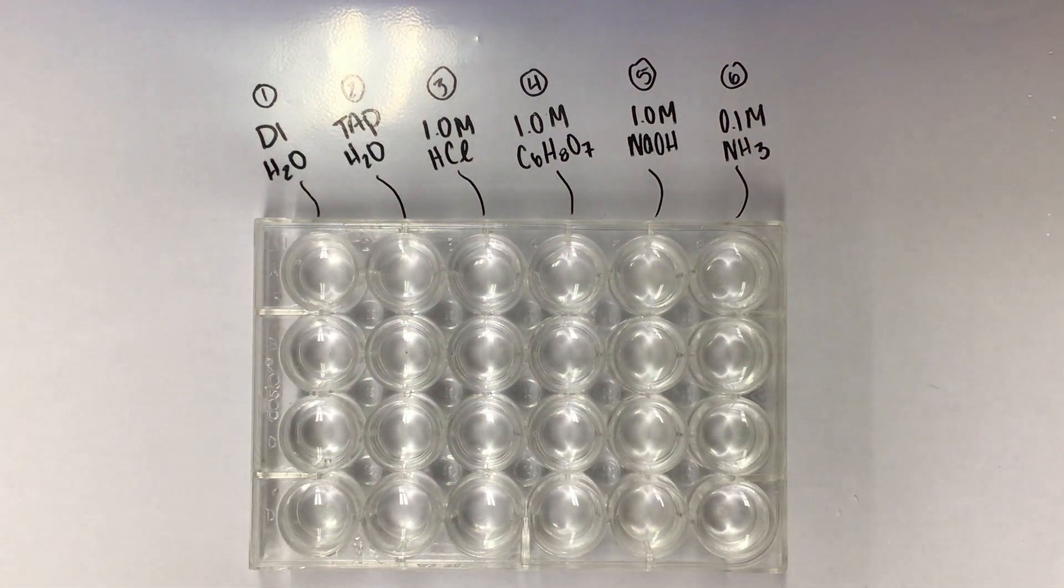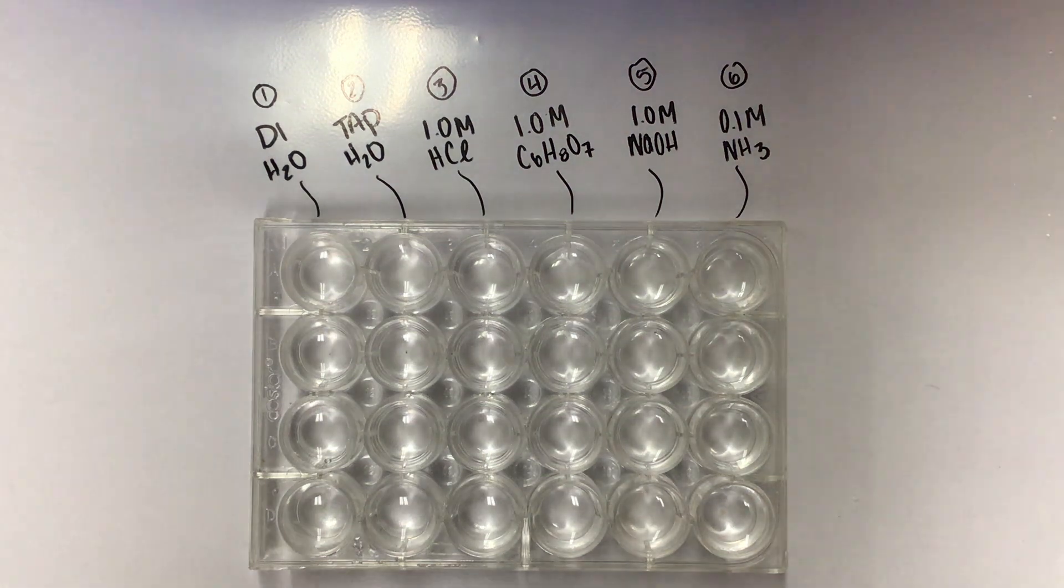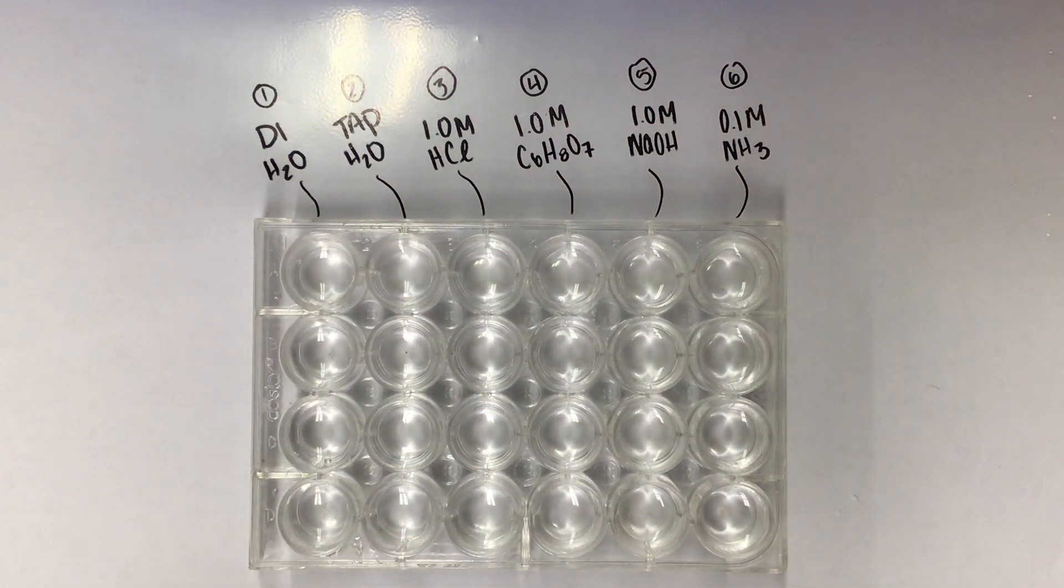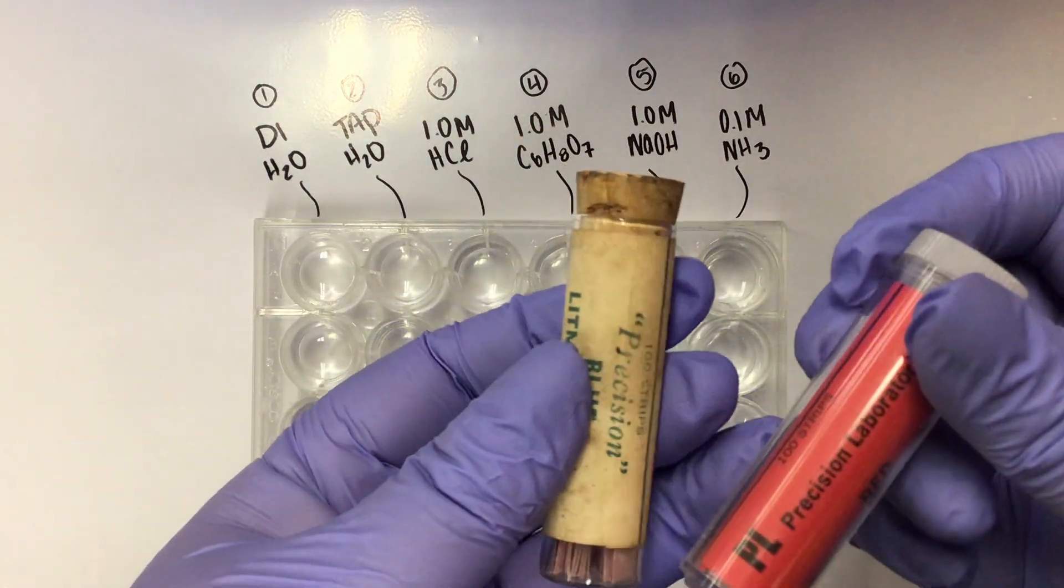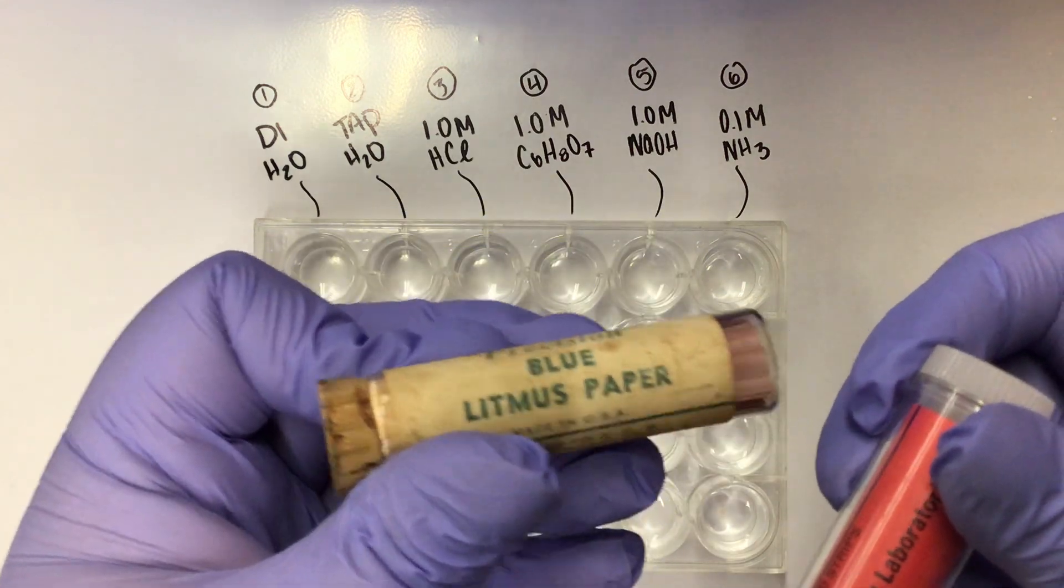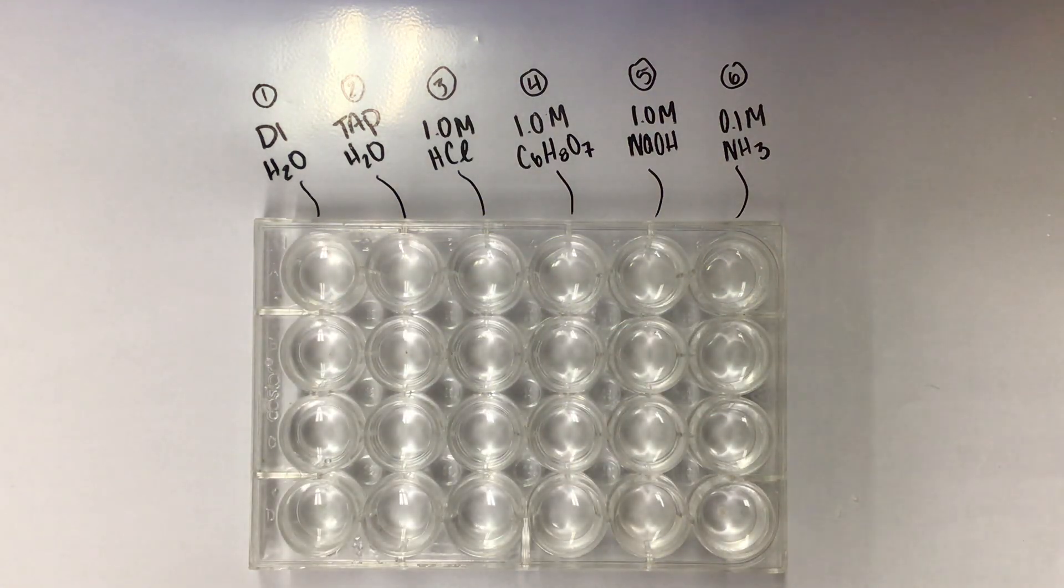Now we're moving on. We're going to do the litmus paper test. There's two kinds of litmus paper: red litmus paper and blue litmus paper. We are going to test each of them. Here's our litmus paper containers. This one's from, I don't know, the 1800s, it feels like. It's a really old bottle.